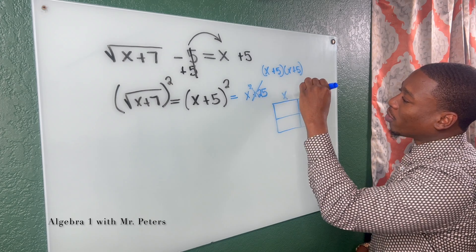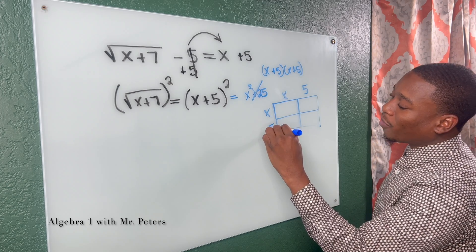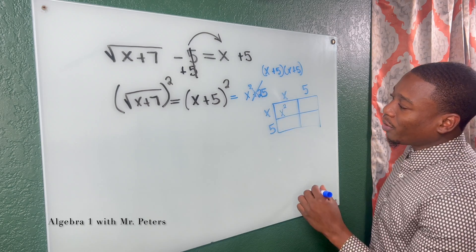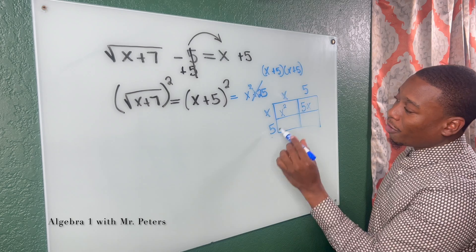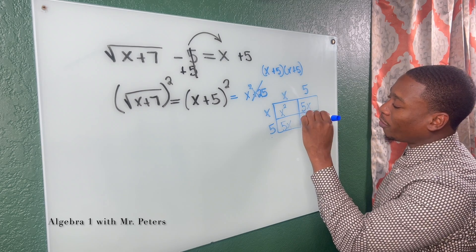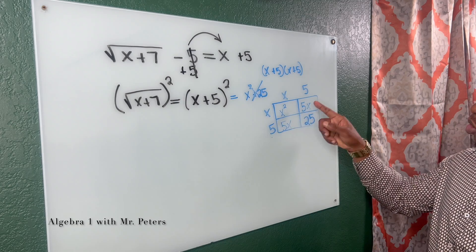So we have X plus five on top, X plus five on the side. And now we just multiply. X and X gives me X squared. X times five gives me five X. Five times X gives me five X. And then five times five gives me 25.